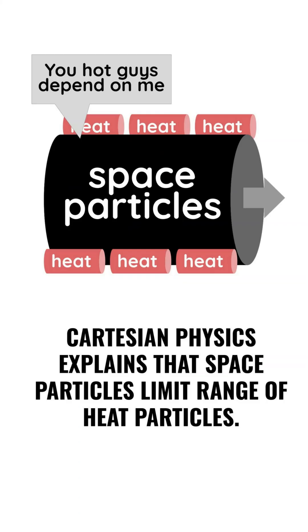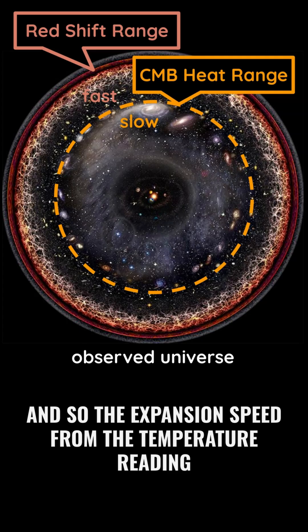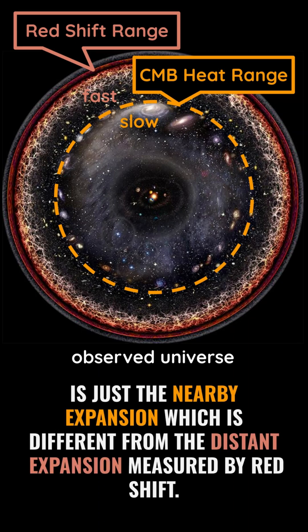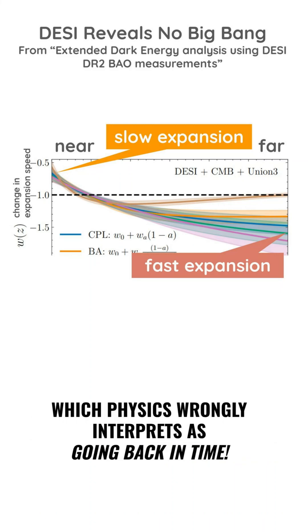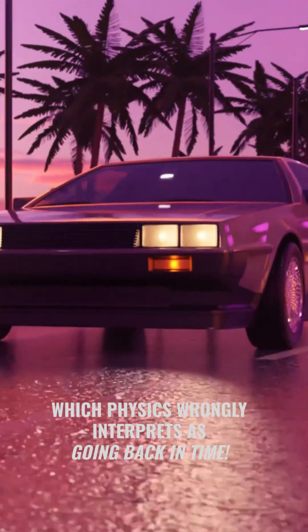Cartesian physics explains that space particles limit the range of heat particles. So the expansion speed from the temperature reading is just the nearby expansion, which is different from the distant expansion measured by redshift. This matches the findings of DESI, which shows expansion is faster in the distant universe — something mainstream physics wrongly interprets as going back in time.